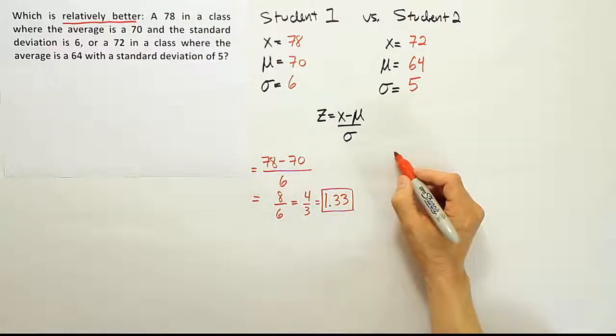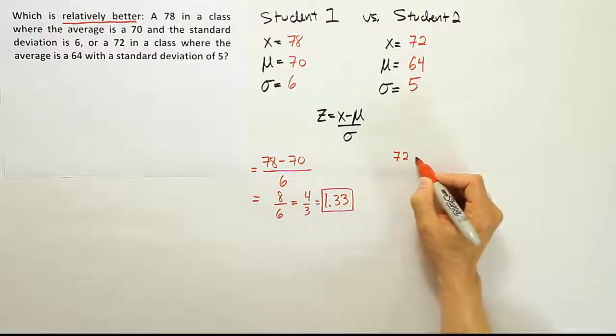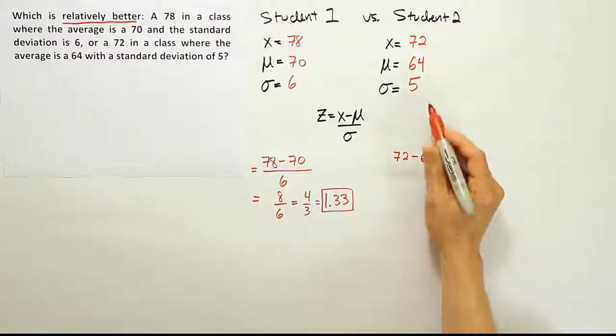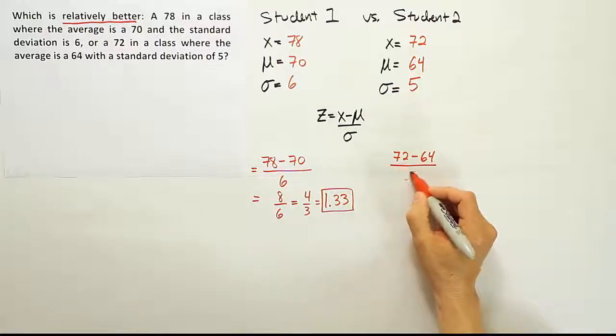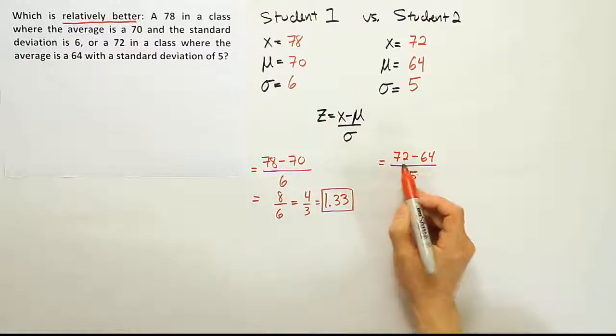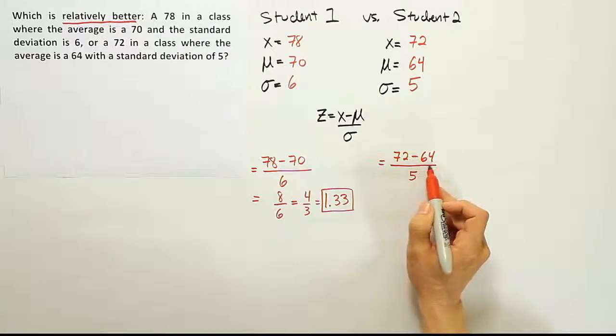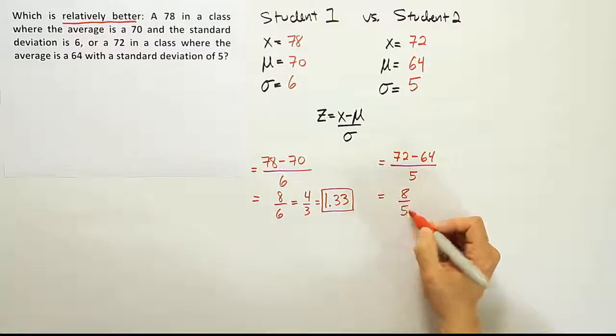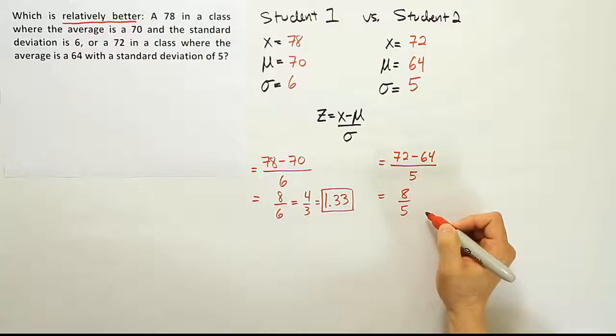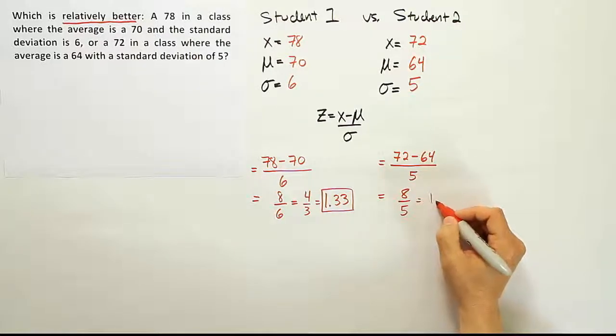Alright, now let's go for student 2. His score would be 72 minus the mean of 64. And then divide by the standard deviation of 5, right? Okay, so 72 take away 64. Again, that's a difference of 8. But it would now be 8 fifths. 5 goes into 8 evenly once with 3 fifths left over. So that's 1.60 as a decimal.